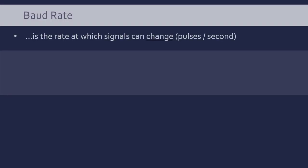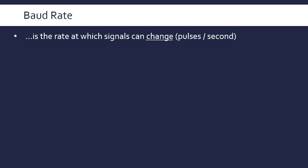Hi, I'm going to be taking you through four really important terms for communication. The first of which is the baud rate, and this is the rate at which signals can change. I think of it in terms of the number of pulses created per second.